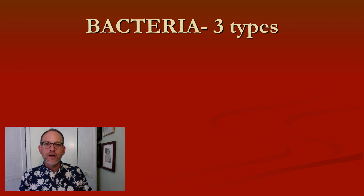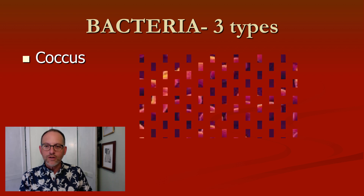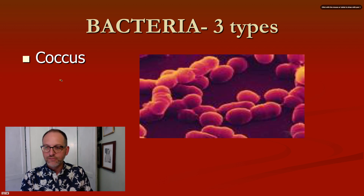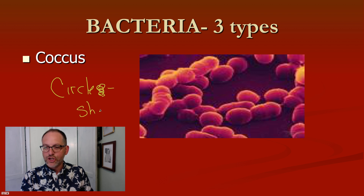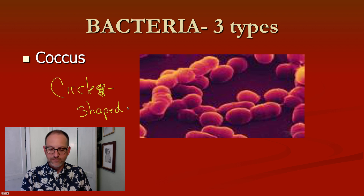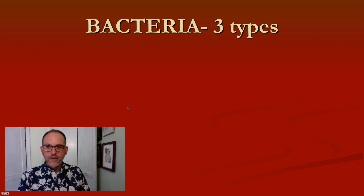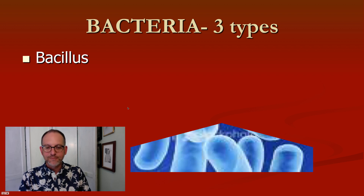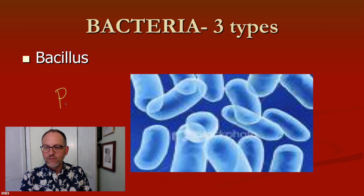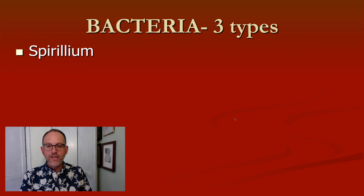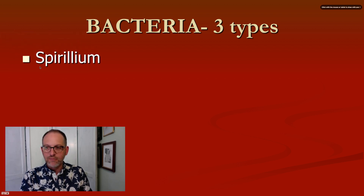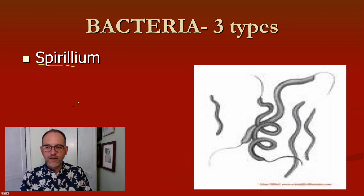Moving on to bacteria — again, we're talking about prokaryotes. Bacteria are typically found in three different forms: coccus, which are circle-shaped; bacillus, which are rod-shaped bacteria; and lastly spirillum — the name gives it away, they're spiral-shaped.